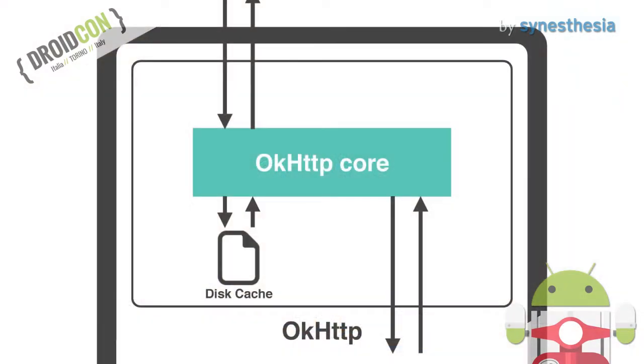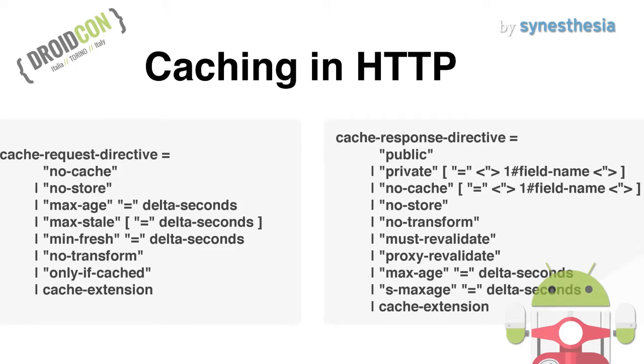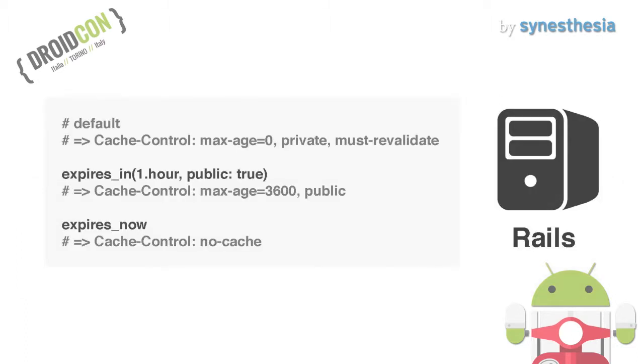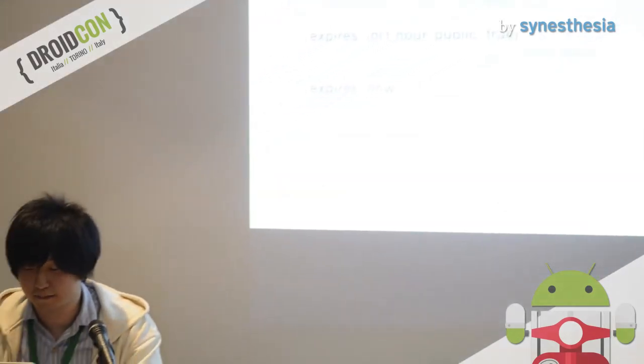Next, caching data. Effective cache control will dramatically reduce server load. OkHttp has a disk cache internally. Needless to say, caching behavior is based on Cache-Control. By default, cache is disabled. If you want to enable cache, all you have to do is set a cache instance to the OkHttp client. Then check whether Cache-Control is enabled on the server side. For example, we are using Ruby on Rails, so I call expires_in. If I call expires_in with one hour, Rails sets Cache-Control with max-age 3600.